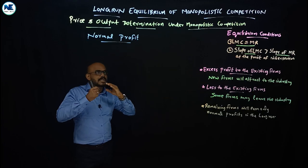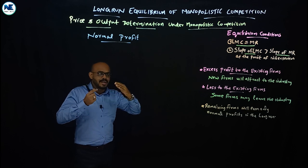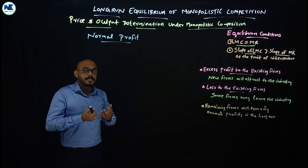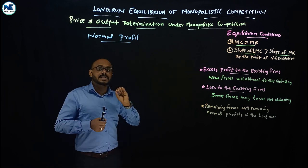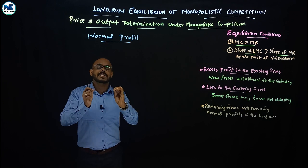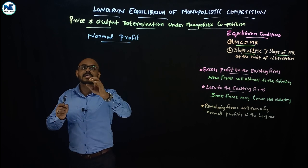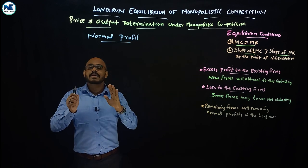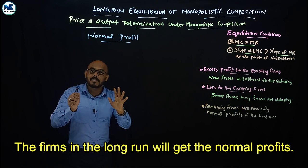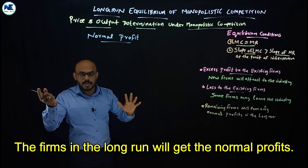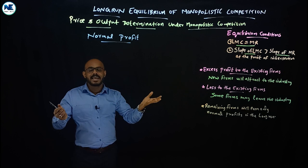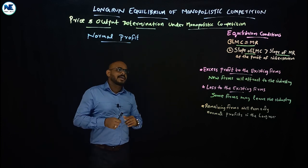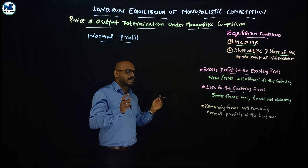In the short run, monopolistic competition resembles monopoly with possibilities of abnormal profit, normal profit, and loss. But the long run equilibrium of monopolistic competition actually resembles perfect competition. Just as in perfect competition's long run, firms in monopolistic competition can earn only normal profit in the long run - neither super normal profit nor loss. That is the only possibility in the long run.